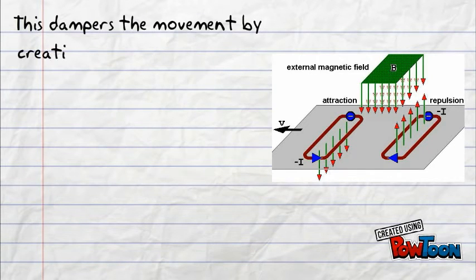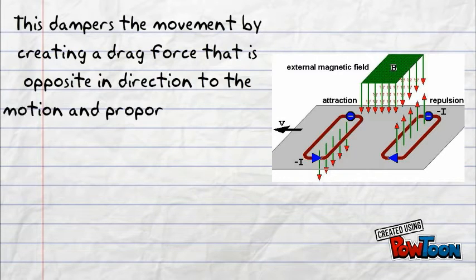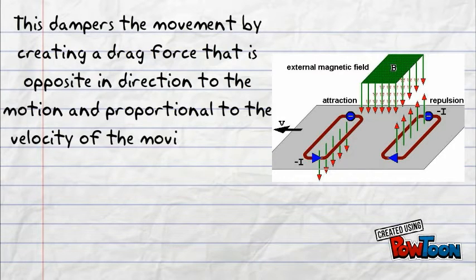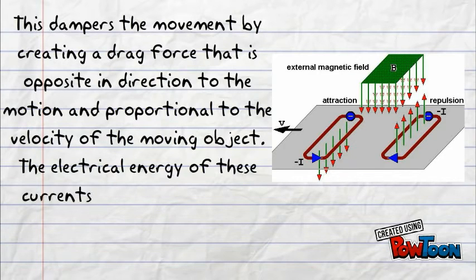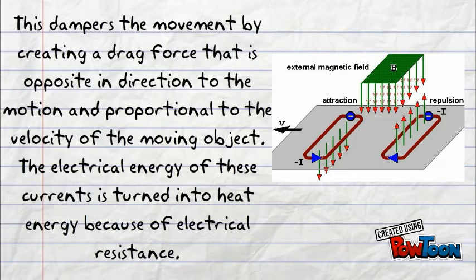This dampers the movement by creating a drag force that is opposite in direction to the motion and proportional to the velocity of the moving object. The electrical energy of these currents is turned into heat energy because of their electrical resistance.